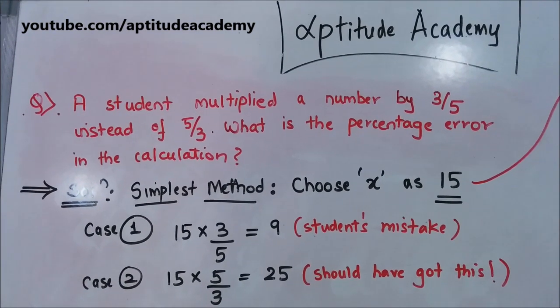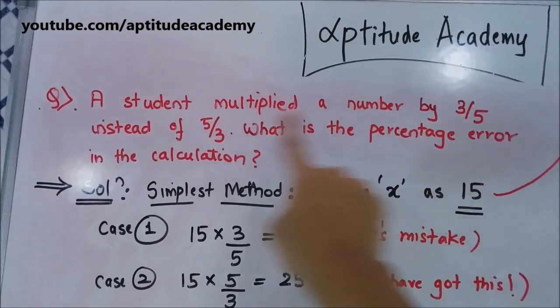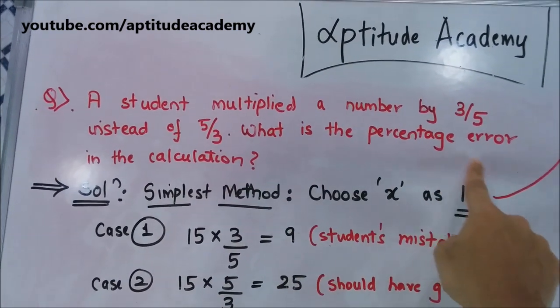Hi, I'm Daniel D'Souza and welcome to Aptitude Academy. Today's problem: A student multiplied a number by 3/5 instead of 5/3. What is the percentage error in the calculation?